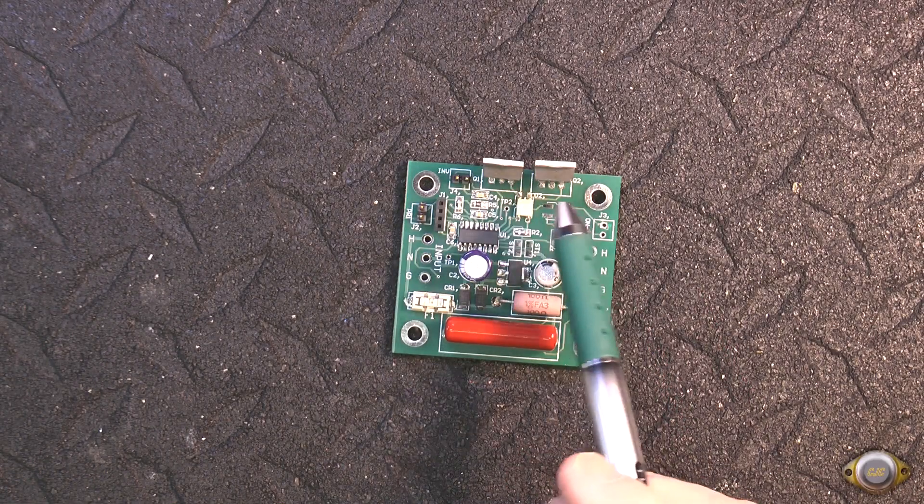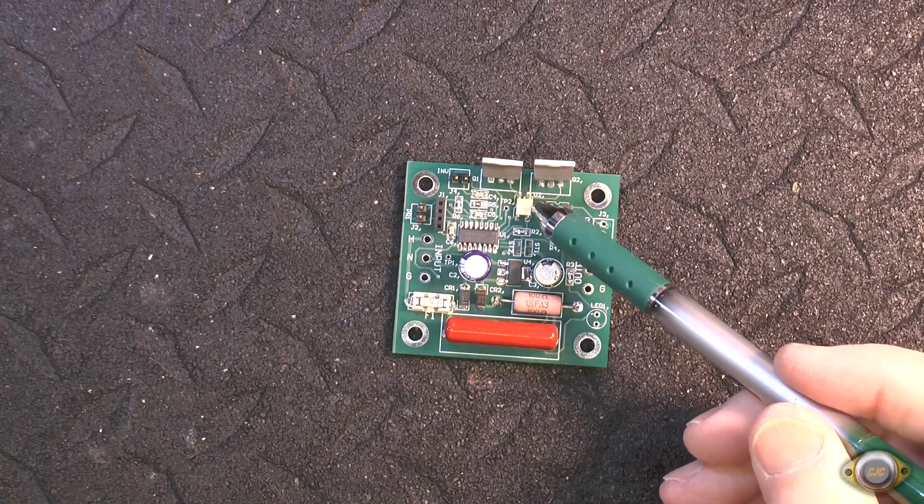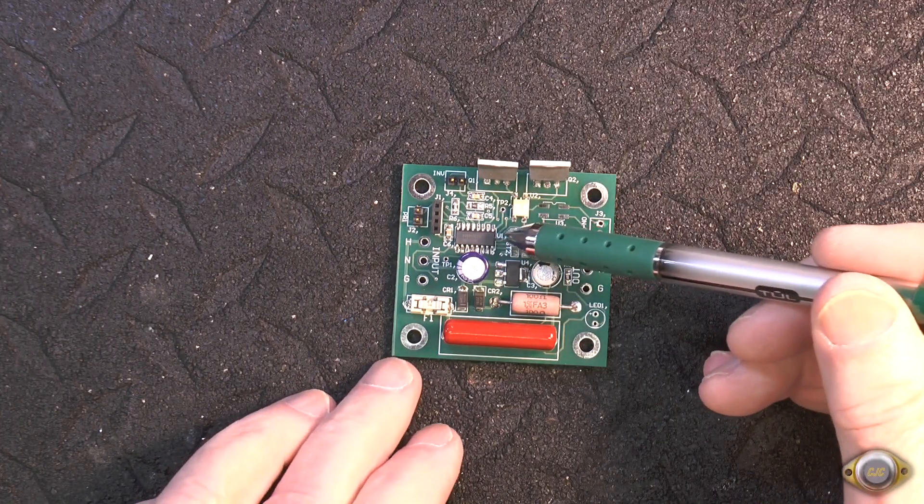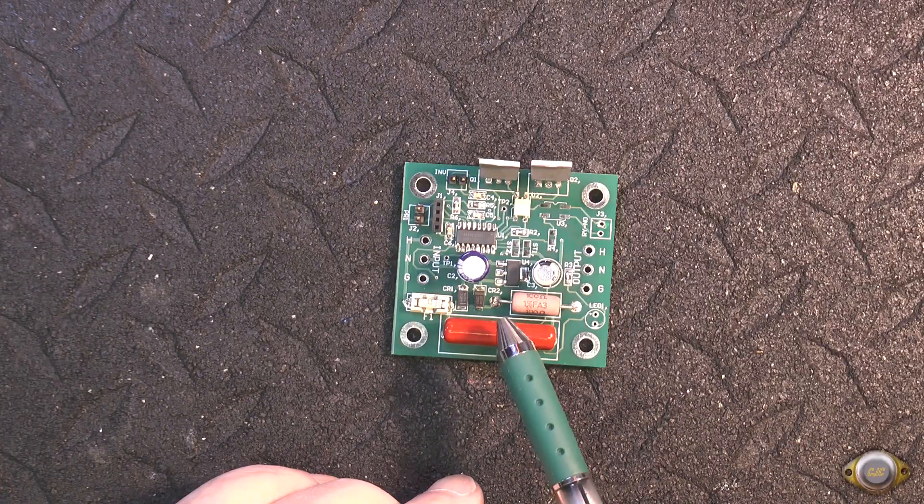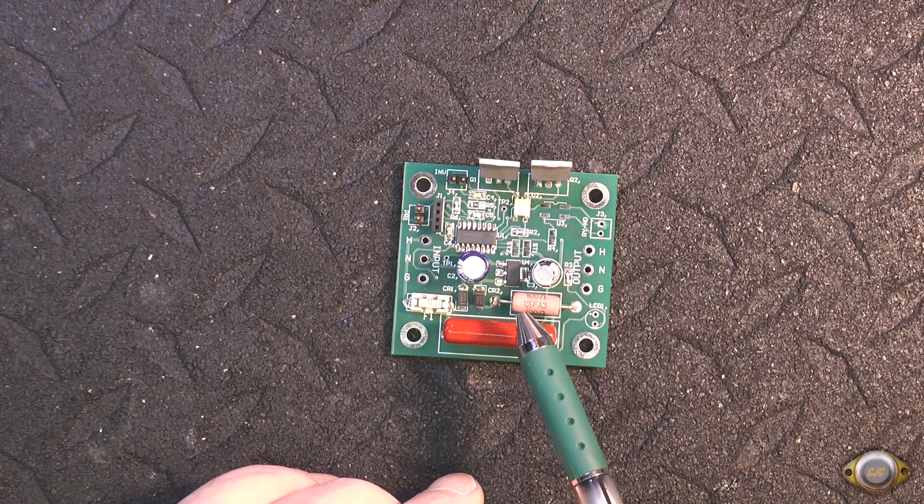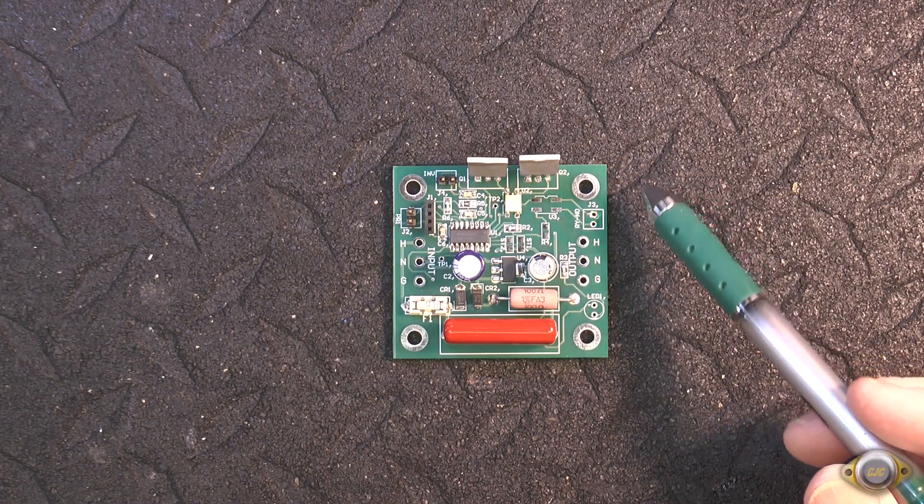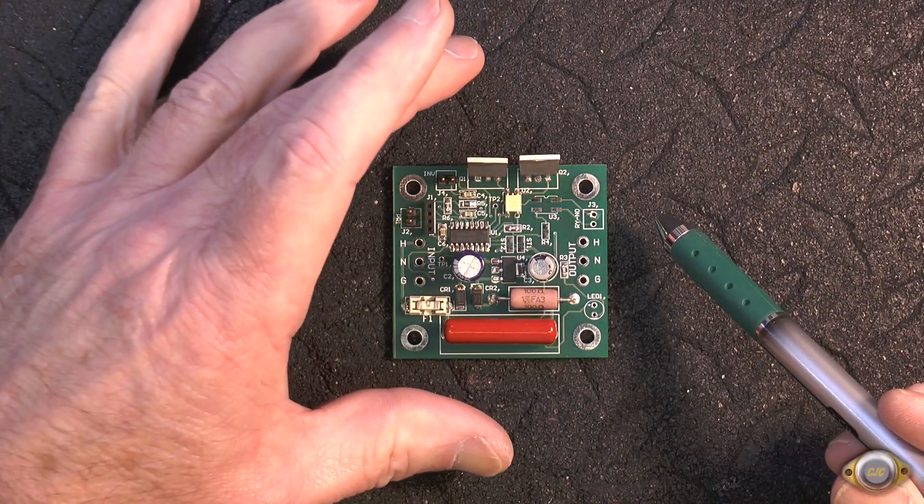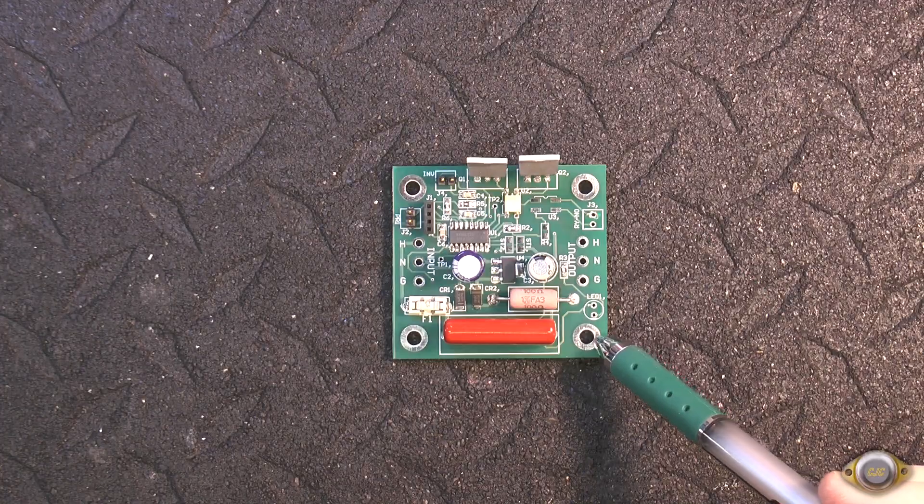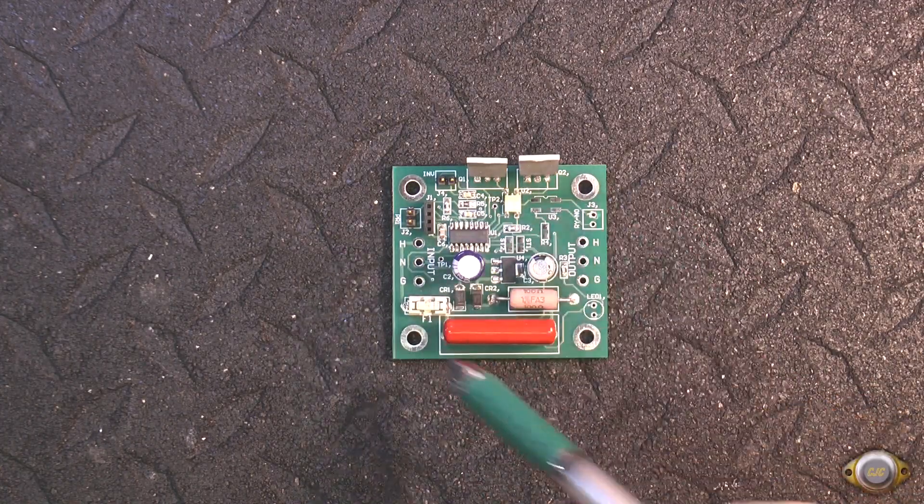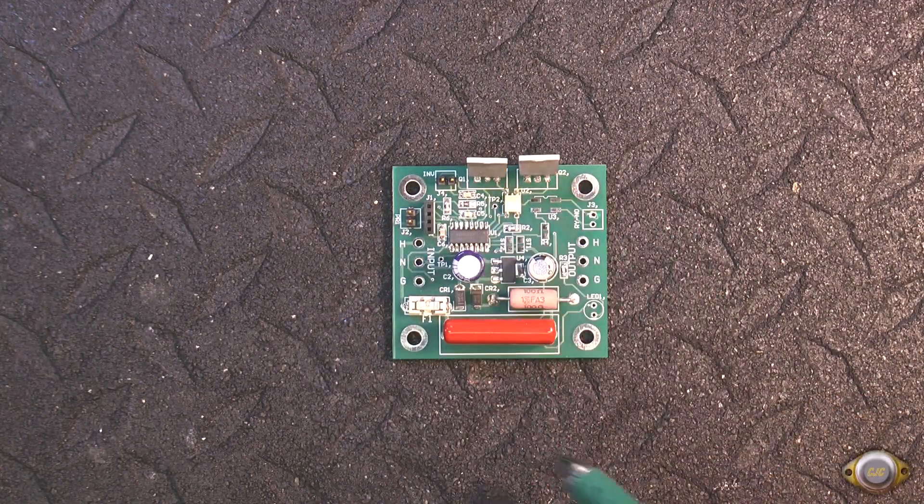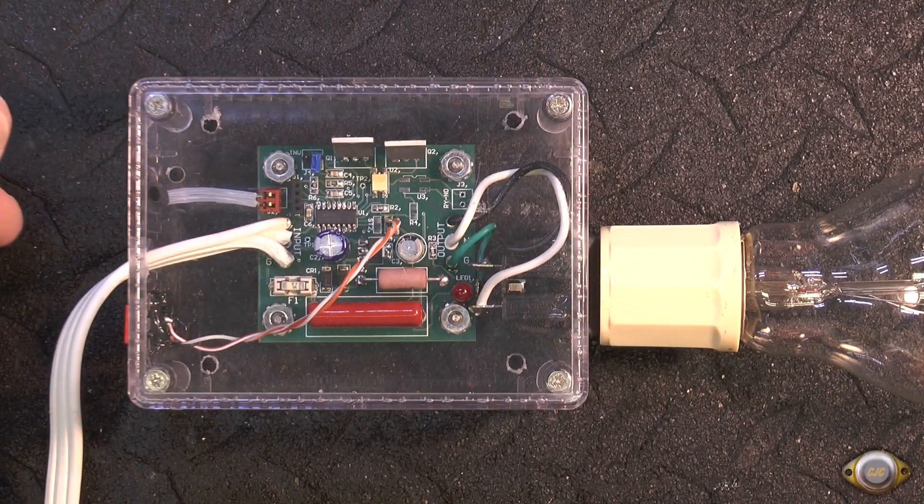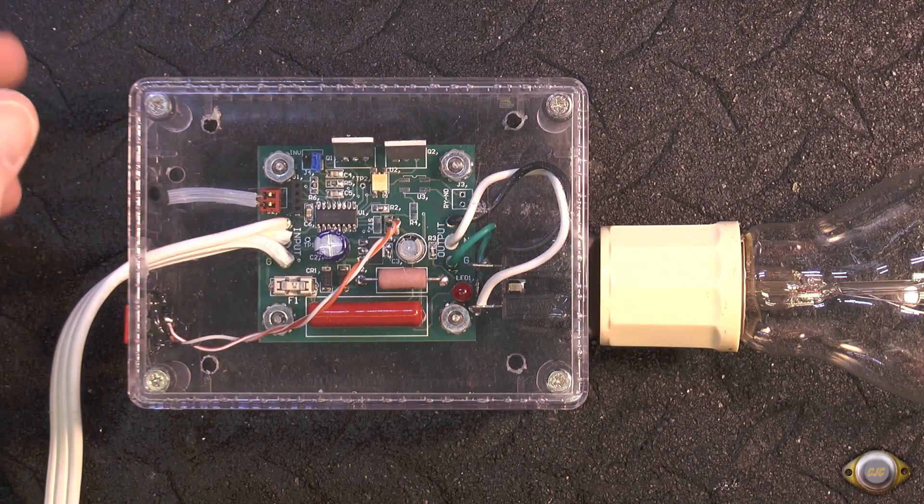This is the PC board for that project. I have the two SCRs here driven by the opto coupler, a little microcontroller, and the AC capacitor, input capacitor. This circuit has to be isolated of course because it's hot to the line. These mounting holes are isolated from any of the circuitry on the board.